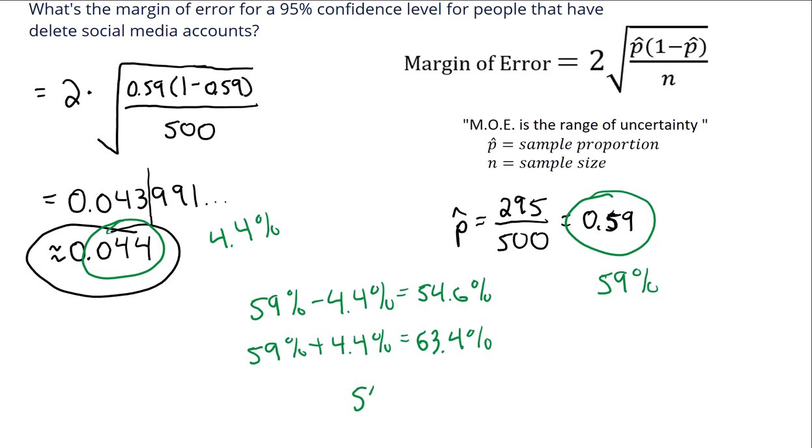So that range, or our confidence interval, would be 54.6% to 63.4%, and we would say that for our sample, we had 59% of the people say that they deleted social media accounts, but we would expect, or we'd be 95% confident that the true population proportion would fall between 54.6% and 63.4%.